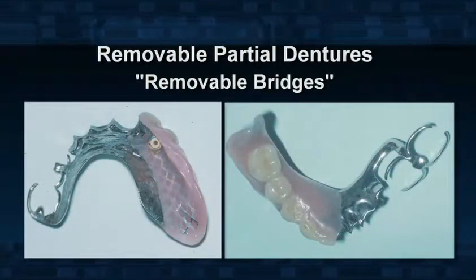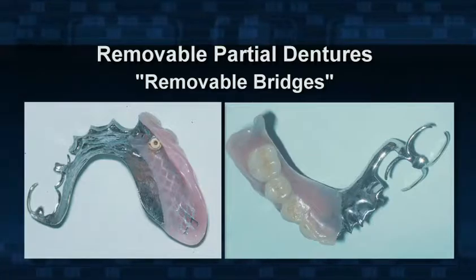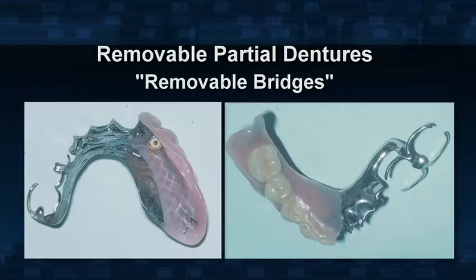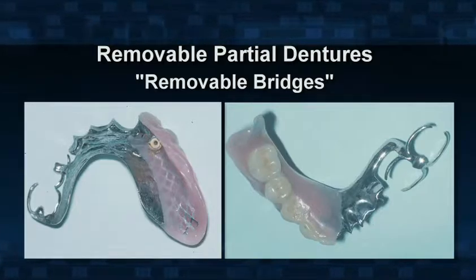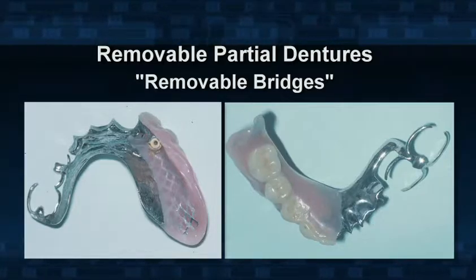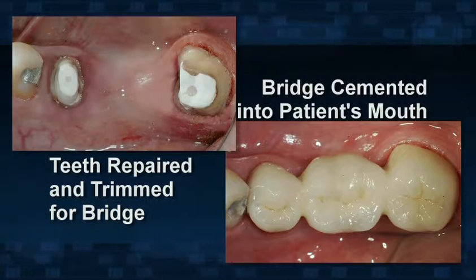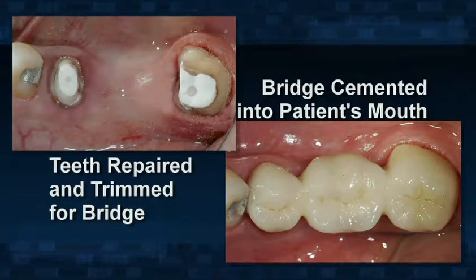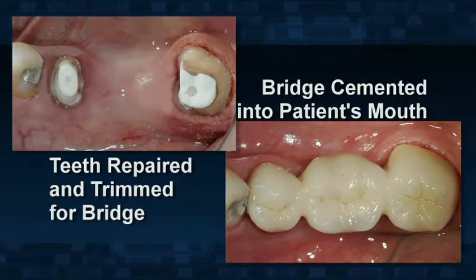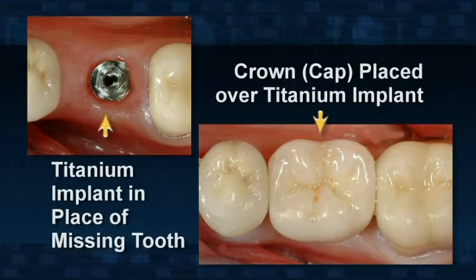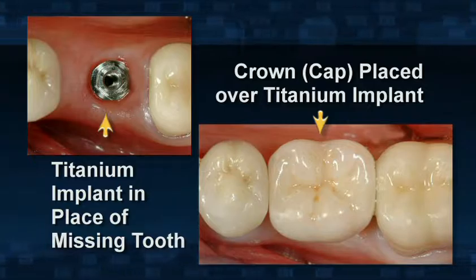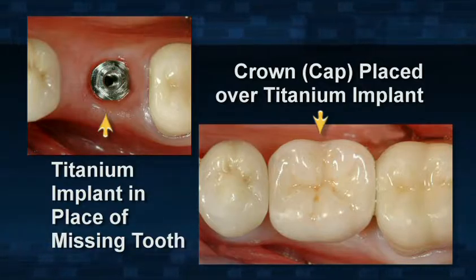Removable partial dentures are the least expensive alternative for several missing teeth, and most third-party insurance companies will pay a significant portion of the cost where they won't pay for many of the alternatives. Crowns or bridges placed over natural teeth are several times more expensive than removable partial dentures. Crowns or bridges over implants are equal to or more expensive than when natural teeth are present to support the fixed bridges.